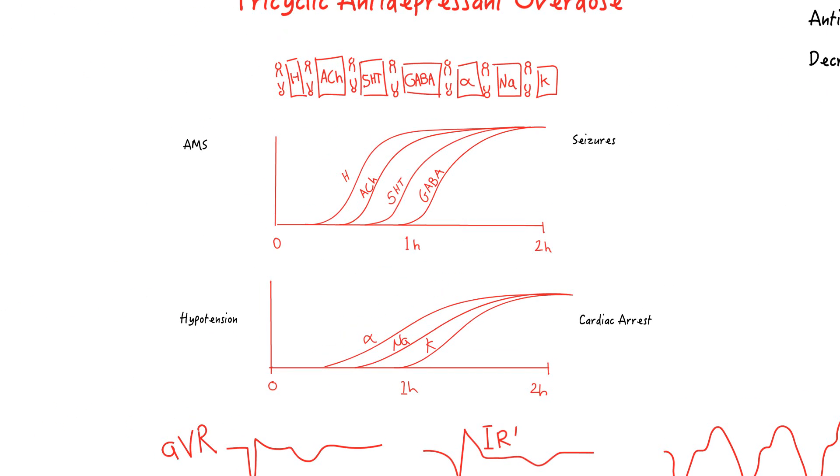In summary, TCA causes altered mental status, seizures, hypotension, and cardiac arrest.